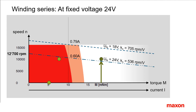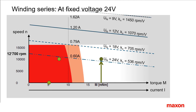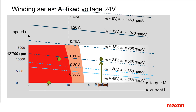However, the current requirements are higher, as can be seen by comparing the needed current for 10 mNm of torque. The windings with even lower nominal voltage of 12V or 9V won't make good use of the available voltage — the controller would have to reduce the motor voltage a lot and the currents needed are much higher. The other two windings with higher resistance and nominal voltage cannot reach the required speed, because their speed constant is too low.